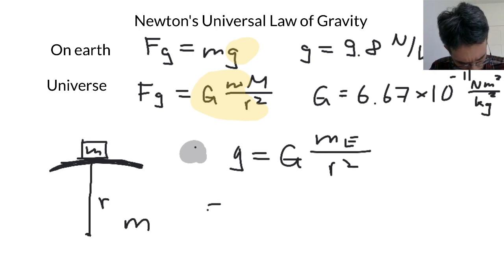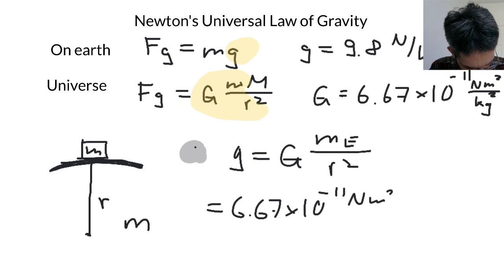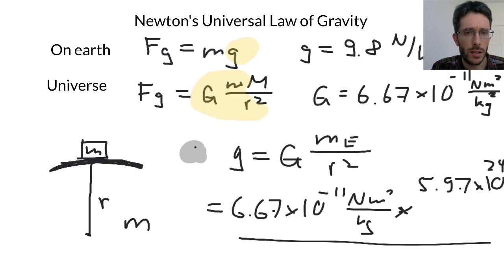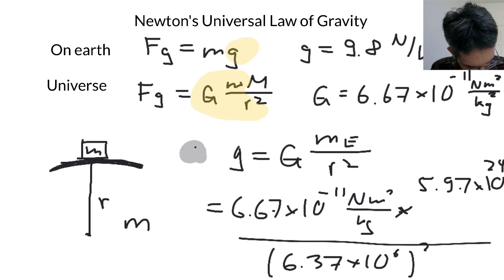So we're going to have equals 6.67 times 10 to minus 11 newton square meters over kilogram squared times the mass of the Earth, which is 5.97 times 10 to the 24 kilograms, and then divided by the radius squared. The radius of the Earth turns out to be 6.37 times 10 to the 6 meters squared.